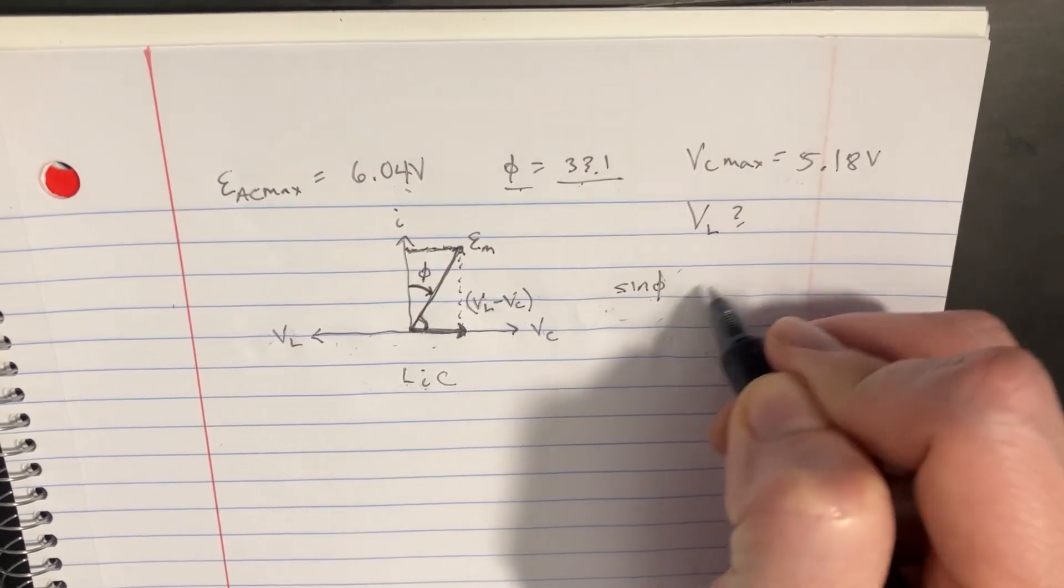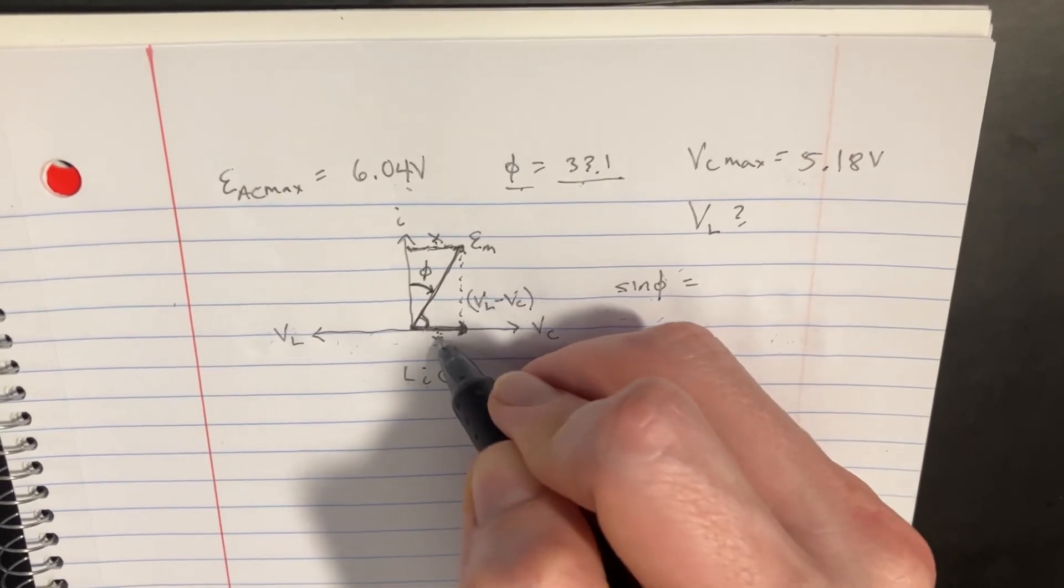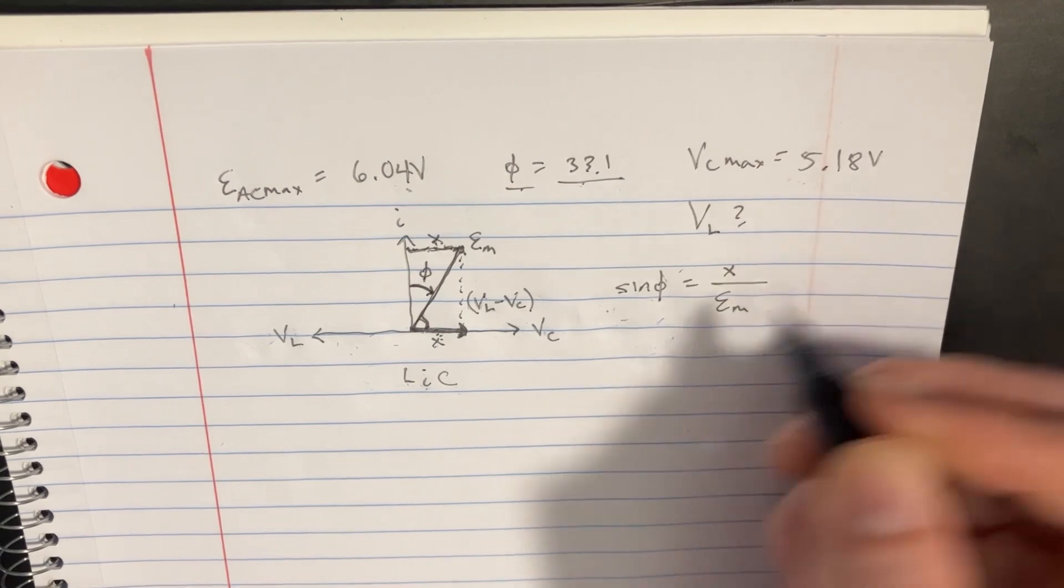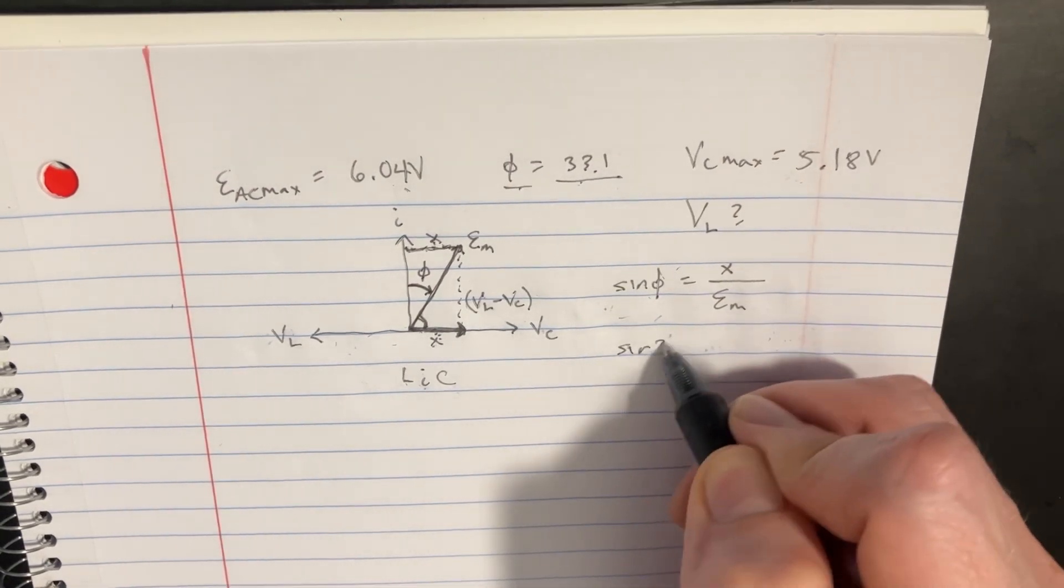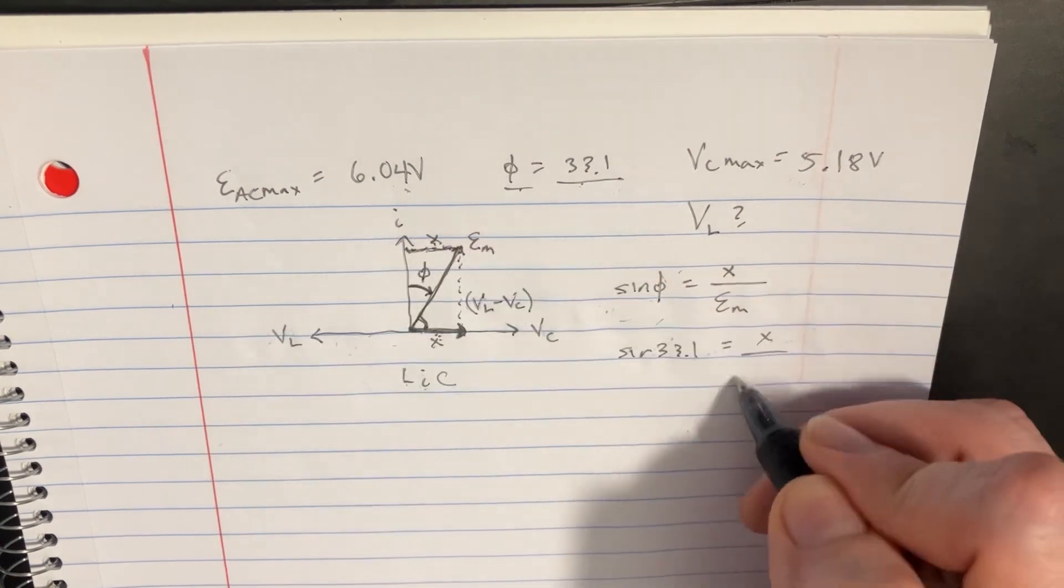The sine of phi equals this length, x, which is this same length right here. It's the same thing. X divided by the hypotenuse, which is this. That's the maximum. So we'll say sine of 33.1 equals x over 6.04.